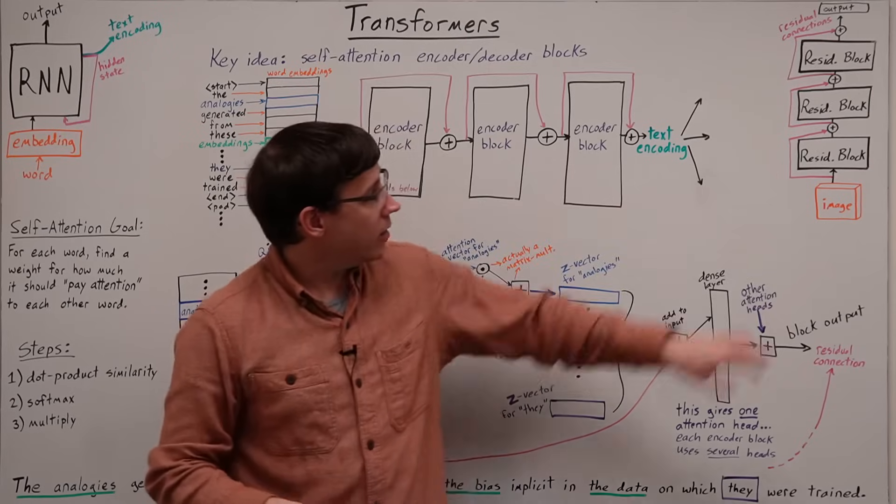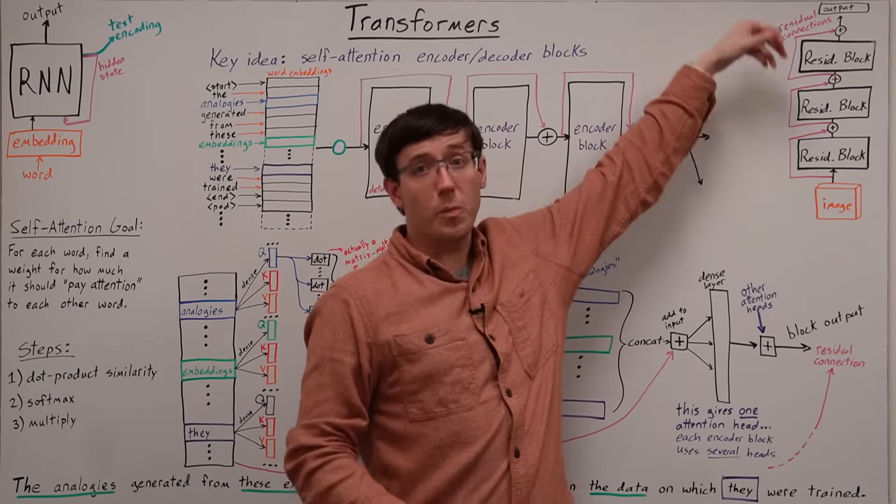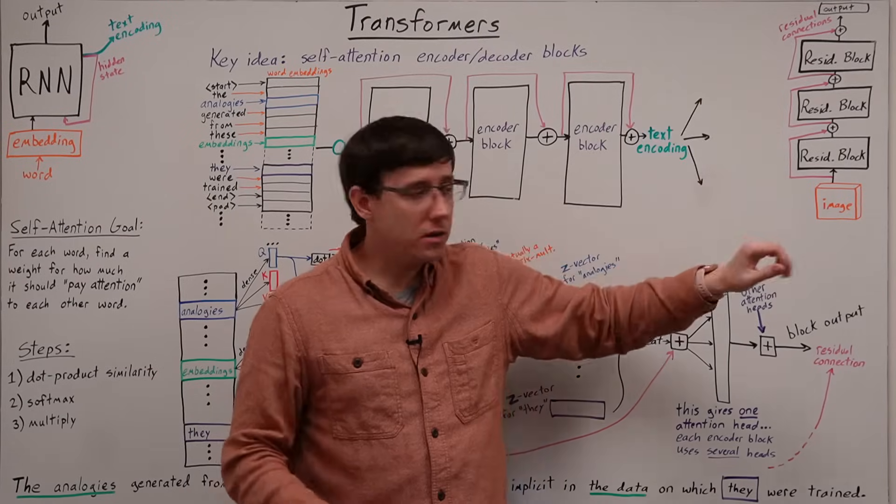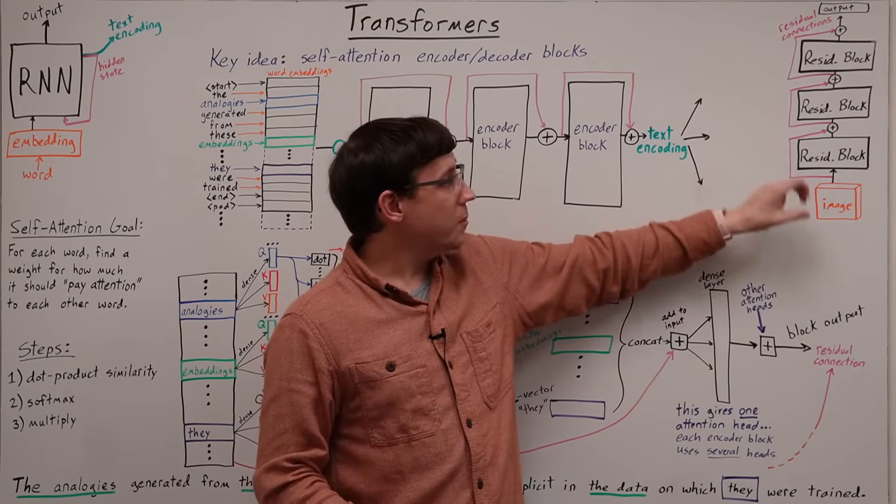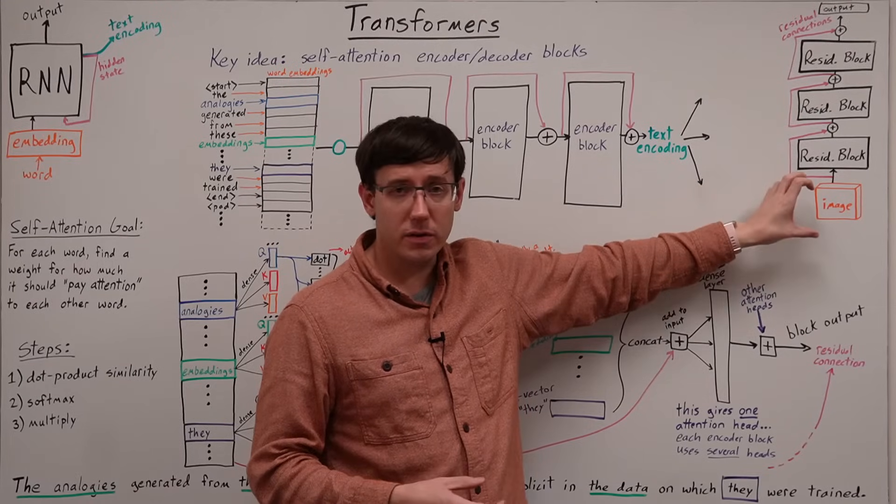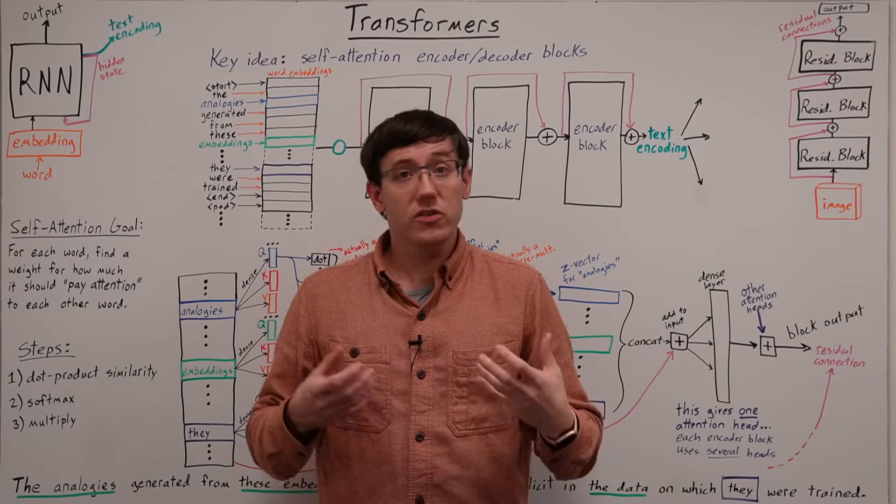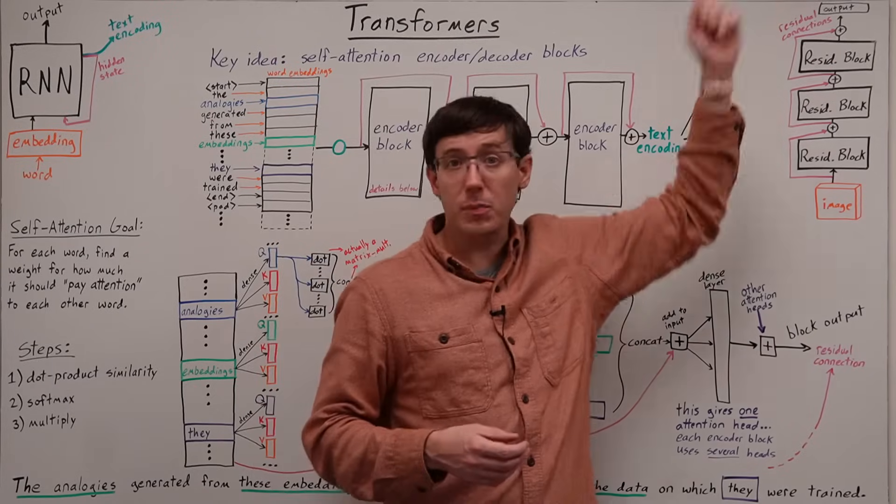On the other hand, residual networks are great at handling data that passes through many, many layers because the residual connections mean that each block only needs to augment the input, and that gradients have a shorter path to follow, both of which simplify training of deep networks.